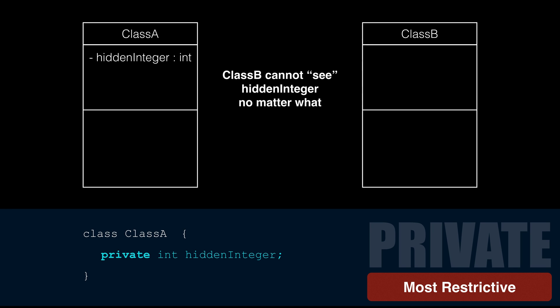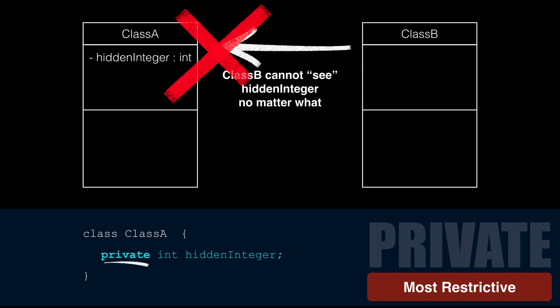Everything inside a class should always start as private. That's a best practice. Private means only this class can see the method or attribute. We denote that with a minus sign in our class boxes. You can't make a private outer class — that would be an invisible class that nothing can use. Private is the most restrictive access modifier.